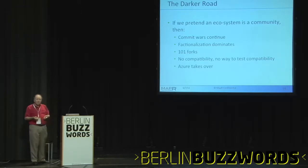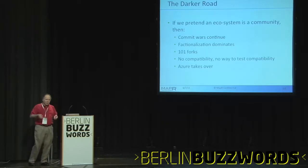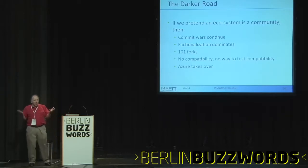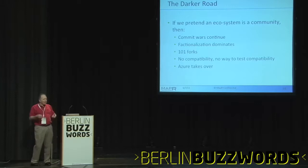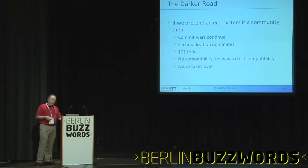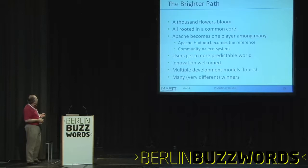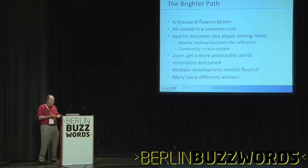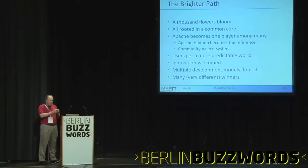In the dark road — thinking of Dante in the middle of the journey of his life, Hadoop finding itself in a dark wood — the dark wood ends with something equivalent to Microsoft or Azure taking over. Most people probably don't remember the 80s, 90s, and early 2000s; that was a bad world because the people who controlled it really didn't share our values. So we need to come to some way to build this ecosystem. Here's another alternative future: we could have a thousand flowers bloom, all rooted in a common core. Apache can become one player among many, with Apache Hadoop as the reference core. A community migrates to an ecosystem.